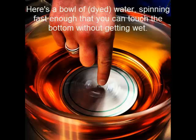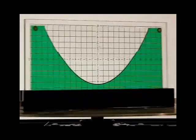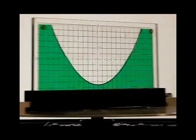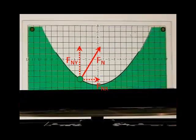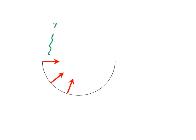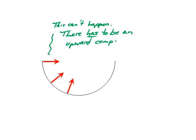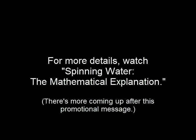Thinking of the situation in terms of the rotating reference frame, the so-called centrifugal force pushes the water outwards. I think the better way to look at it is in terms of the non-rotating reference frame, talking about centripetal force rather than centrifugal force. For instance, this provides an easy way to understand why the surface shape is not a semicircle. A semicircular surface would have to be vertical eventually, meaning the normal force at that point would be purely horizontal. But it can't be — there has to be a vertical component upwards to hold the mass up against the pull of gravity. For a rigorous proof that the shape is a parabola, as opposed to some other non-circular shape such as a catenary or hyperbola, you have to get into the math. I hope you'll watch my follow-up video, Spinning Water: the Mathematical Explanation.